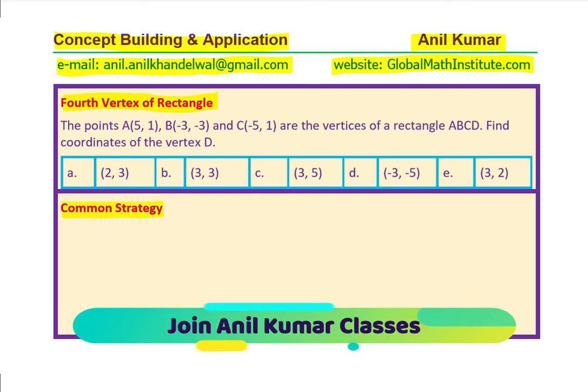Let us begin with the standard approach, which I say as common strategy. We are given a rectangle ABCD with four vertices, out of which three are known to us and fourth one we need to figure out. But it is a good idea to first sketch and visualize. Let us try to place these vertices. A being at 5,1, that becomes point A(5,1).